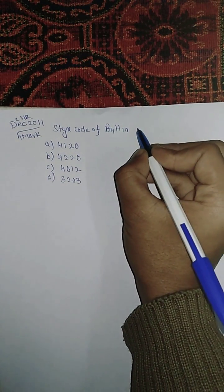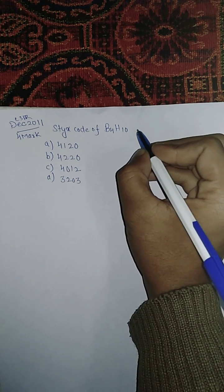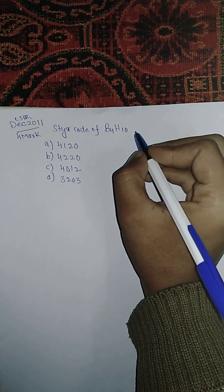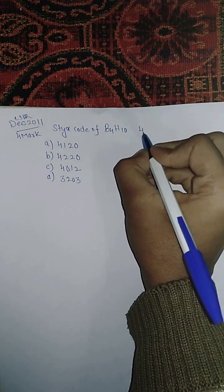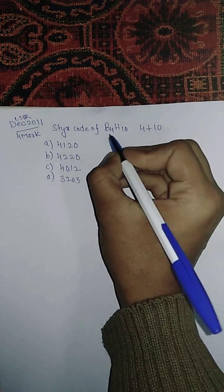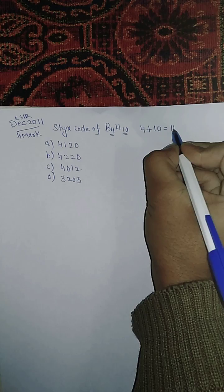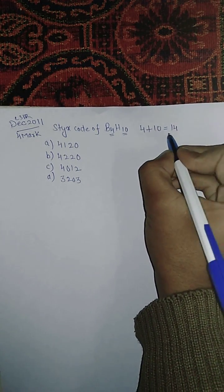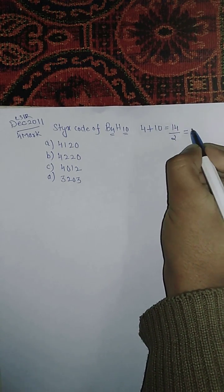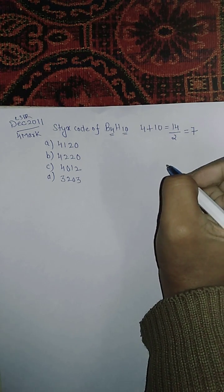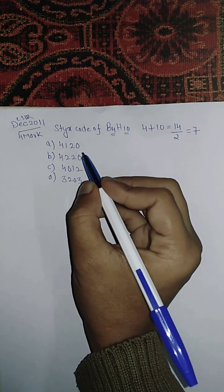This comes out to be 14. Take half of this, which is 7. Now just add the SETX numbers of every option. 4+1+2+0 came out to be 7.